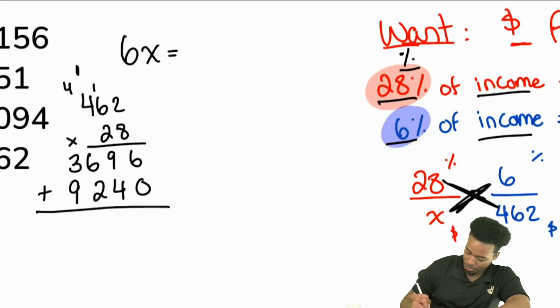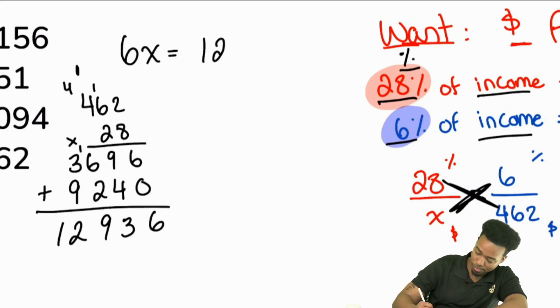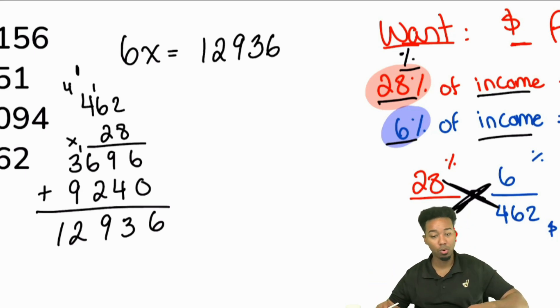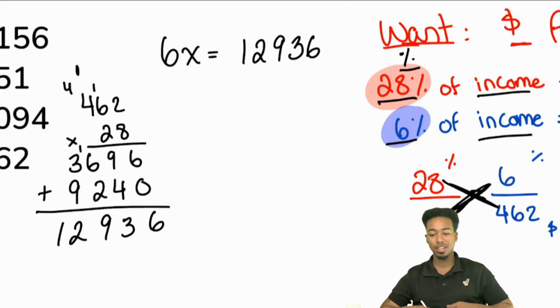So then we add all of this up and we'll have 6, 13. Then we have 8, 9. Then we have 12. So we have 12,936. Okay, that's a lot, but that's fair. Now, everybody, what's the last thing we need to do to solve this? We have 6x equals a massive number. What's the last thing we need to do? Yeah, that's going to be divide by 6.